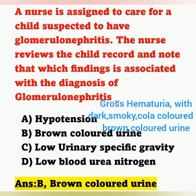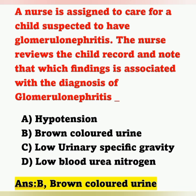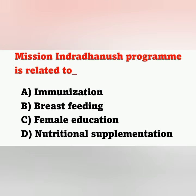In glomerulonephritis, hypertension typically occurs rather than hypotension. Urinary specific gravity is slightly elevated, and high blood urea nitrogen is also seen. These help rule out the other options.